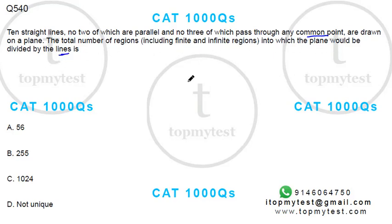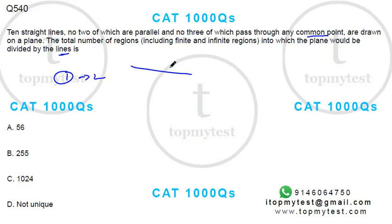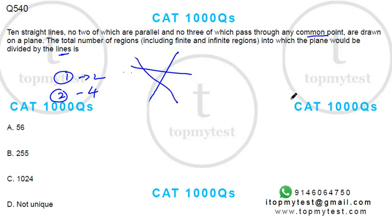If you have one line, you'll have two regions — one and two. If you have two lines, you'll have four regions. If you have three lines, you will get something like this.